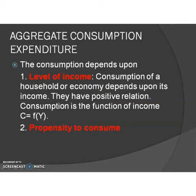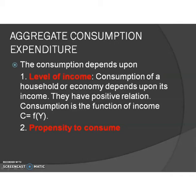First, aggregate consumption expenditure. Consumption expenditure depends upon the level of income and propensity to consume. The consumption of a household or economy depends upon its income — they have a positive relation. If income increases, consumption also increases. We can express this as: C is a function of income, C = F(Y).